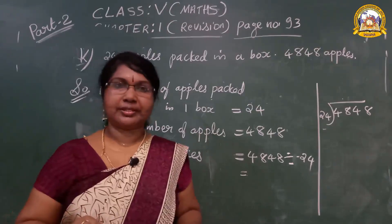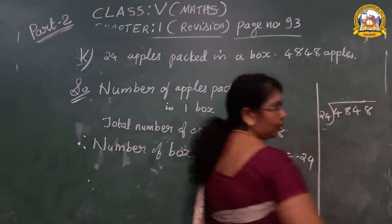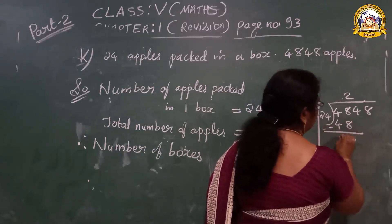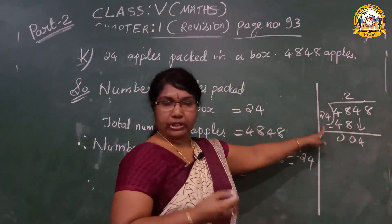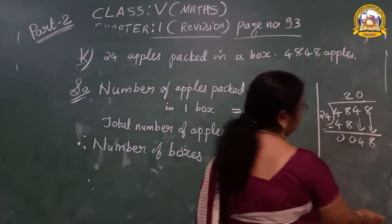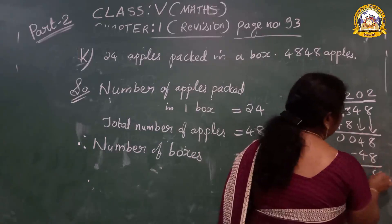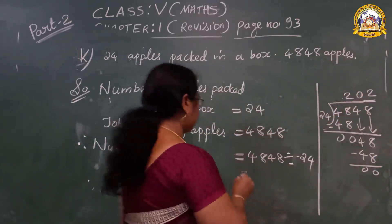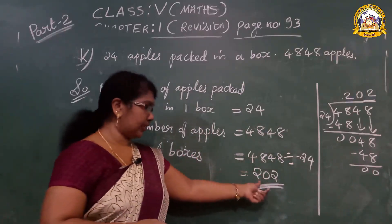Working through 4,848 ÷ 24: can you divide 4 by 24? No, so put zero and carry next to get 48. 24 × 2 = 48. Bring down 4, carry to get 48 again. 24 × 2 = 48. The answer is 202. So number of boxes = 202.